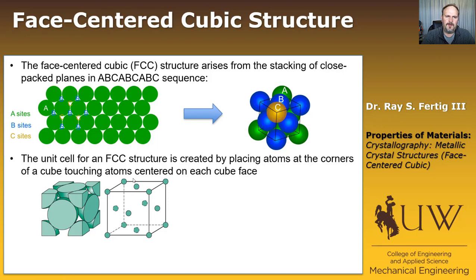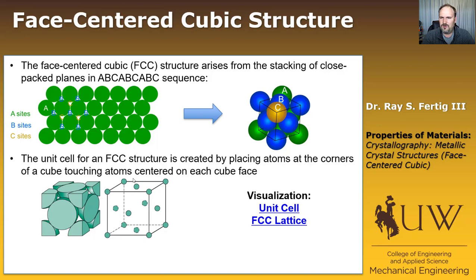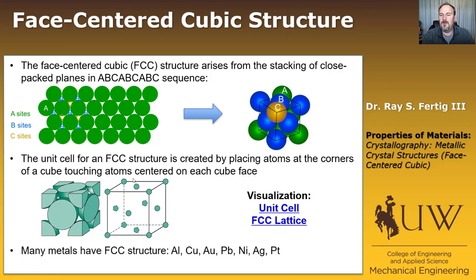I'm going to post this PowerPoint and I have some links — one focuses on the unit cell and one is an entire lattice. I encourage you to go to that website, pull up both a unit cell and a lattice structure, and rotate them around to get a sense for how the closed-packed planes stack up to give you the face-centered cubic structure. Many metals have an FCC structure — aluminum, copper, gold, lead, nickel, silver, and platinum all have an FCC structure.